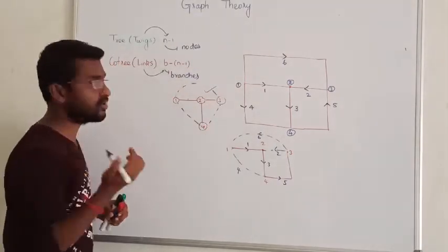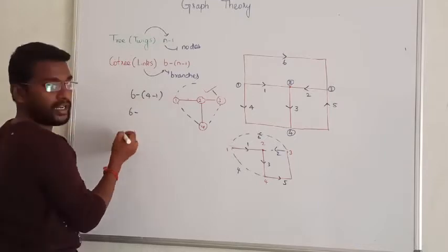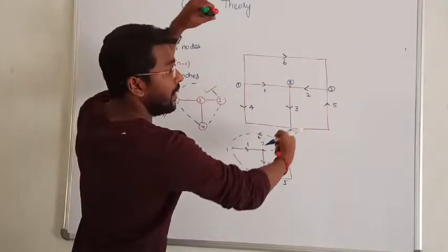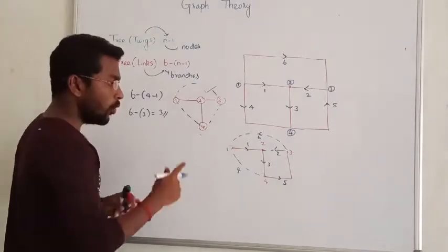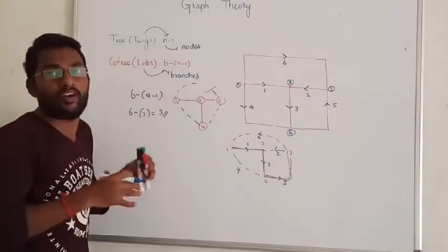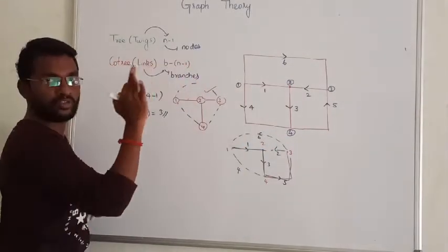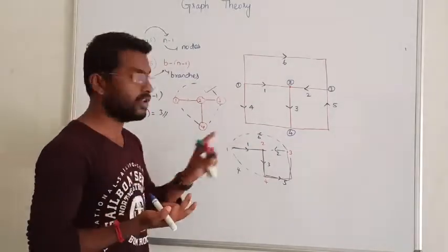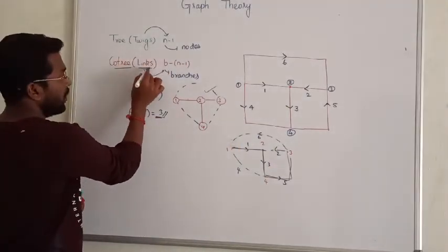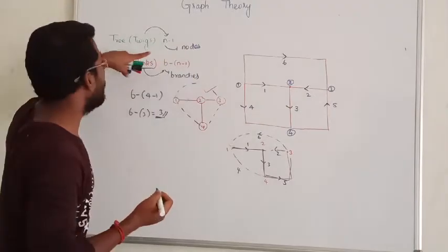For example, if we have 4 nodes and 6 branches, the number of links is 6 minus (4 minus 1), which equals 6 minus 3, giving us 3. So we have 3 links, and those are what we call co-tree branches or links. For ticks — twigs — you use n minus 1; for links you use b minus (n minus 1).